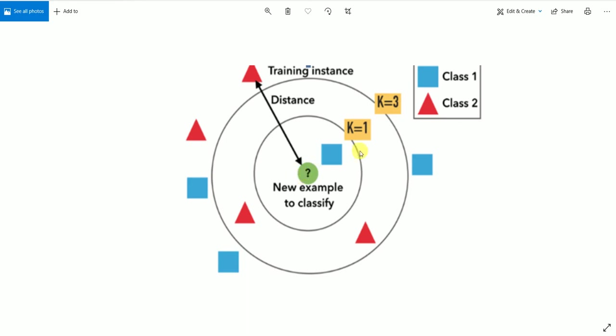For that, we will consider k equal to 1. K will always be an integer value in k-nearest neighbor algorithm. So let us take an example. If k is equal to 1, then we can say that this particular point has only one nearest neighbor and that is this blue square. So if k is equal to 1, then we can say that this point belongs to class 1.